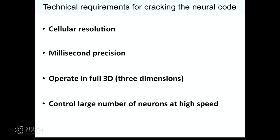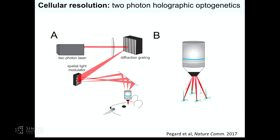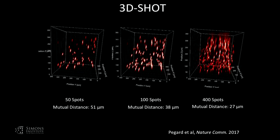We needed a tool with millisecond precision operating in three dimensions that could control a large number of neurons at very high speed — basically operating at the speed and scale of sensory percepts in primary sensory cortex. So we turned to a technology called two-photon holography, or computer-generated holography, pioneered by a number of groups including Valentina Emiliani's. The idea: you take an infrared two-photon laser beam and a spatial light modulator that reshapes the Gaussian wavefront through phase modulation into a three-dimensional pattern of light.